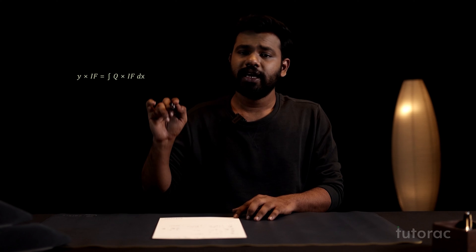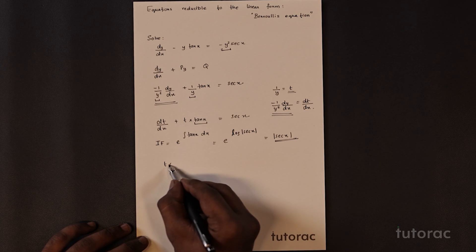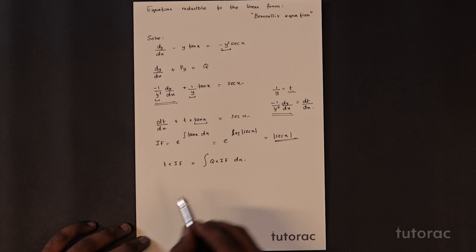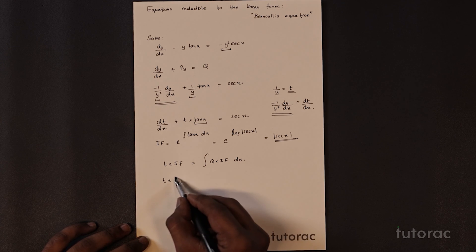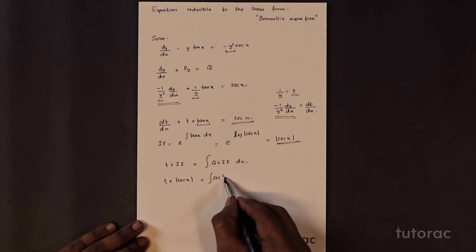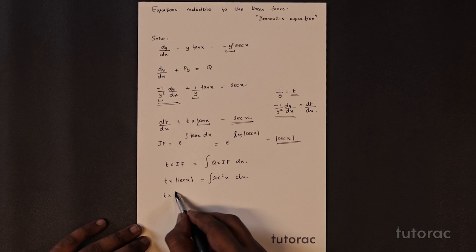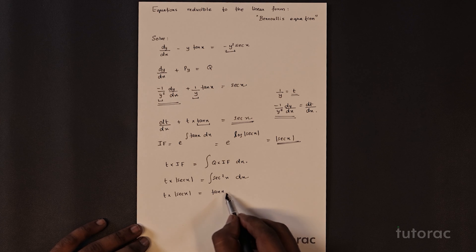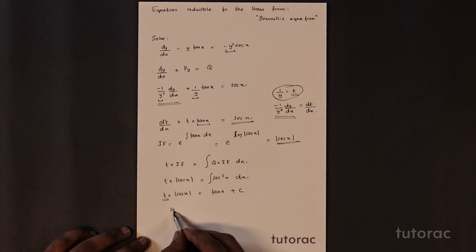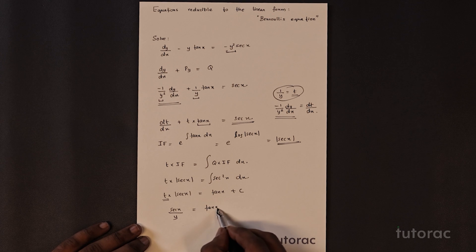After finding the integrating factor, we put it into the formula: t × (integrating factor) = integral of Q × (integrating factor) dx. Here t × sec(x) = integral of sec(x) × sec(x) dx = integral of sec²(x) dx = tan(x) + C. Since t = 1/y, we write sec(x)/y = tan(x) + C, which is the solution.